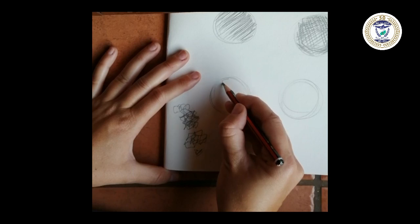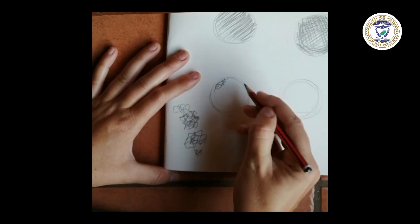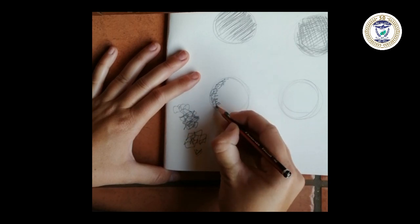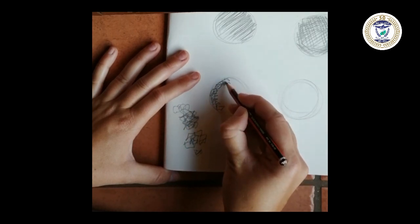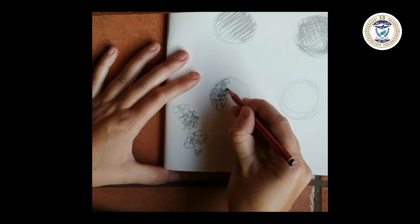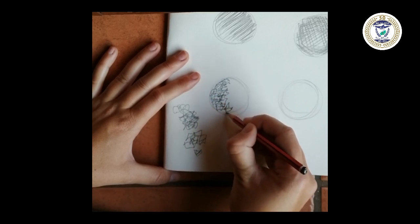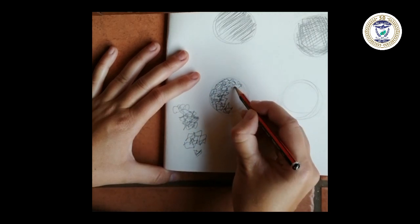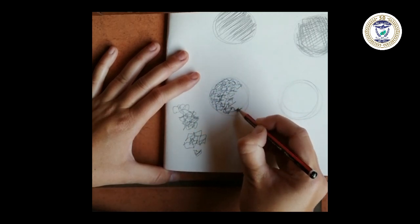Over here we have the scribbling. This is nice for doing tree bark or a teddy bear, for instance. It could be like this, or someone's hair you could do that. Remember when you do your shapes, please fill up the whole shape, not just a part of it. The whole shape.